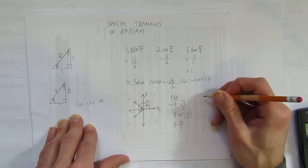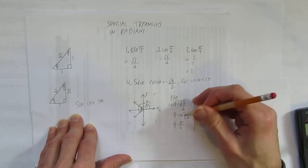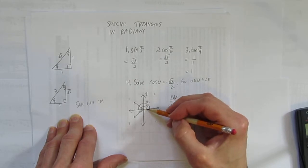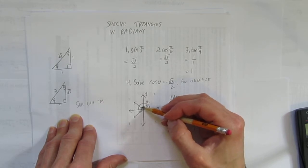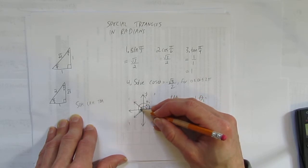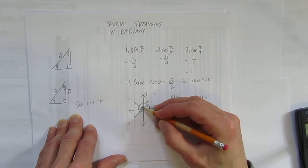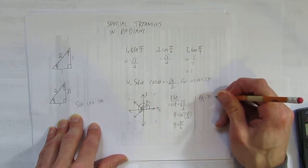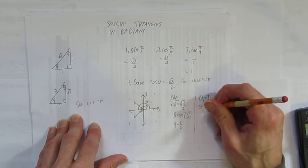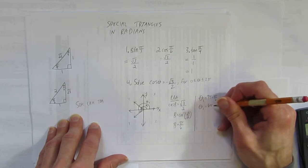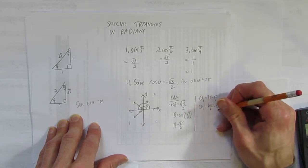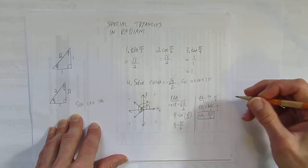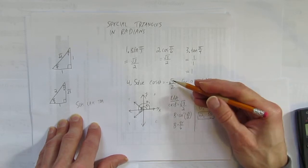Now solve for theta 1. Half-way around a circle is pi. So for quadrant 2, theta 1 equals pi minus beta, which is pi minus pi over 6. Making a common denominator of 6: that's 6 pi over 6 minus pi over 6, so theta 1 equals 5 pi over 6. You can verify on a calculator in radian mode: cos of 5 pi over 6 gives negative root 3 over 2.